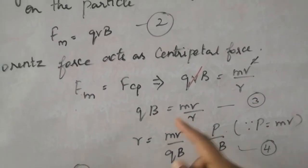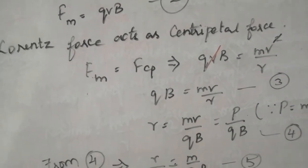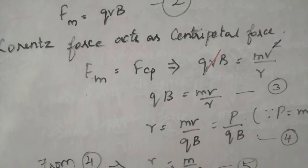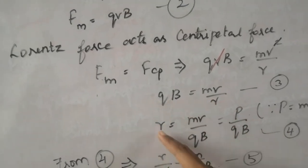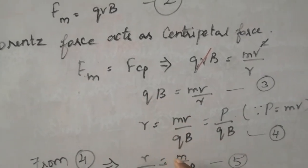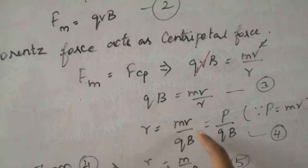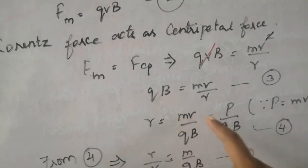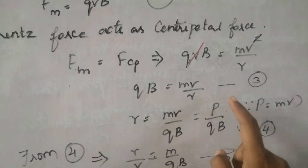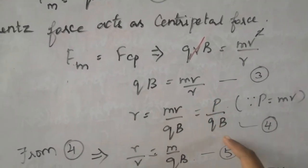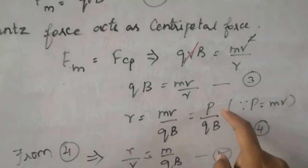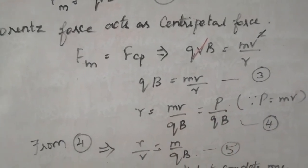Now bring this R to the other side. Then we have R equal to MV by this QB. And we know that what is this MV? It is momentum, linear momentum P equal to MV. So instead of MV you can write it as P. So then it is P by QB. R is equal to MV by QB or else R is equal to P by QB simply. Let this be equation number 4.